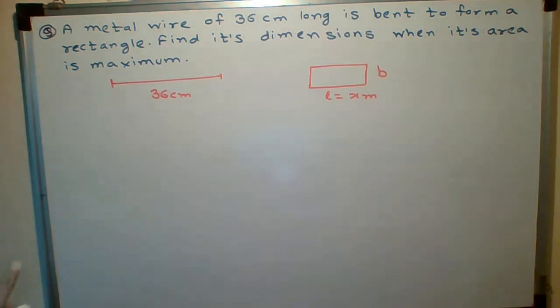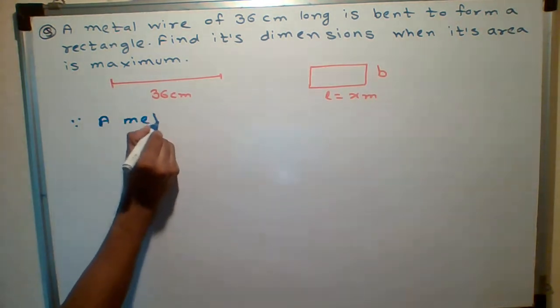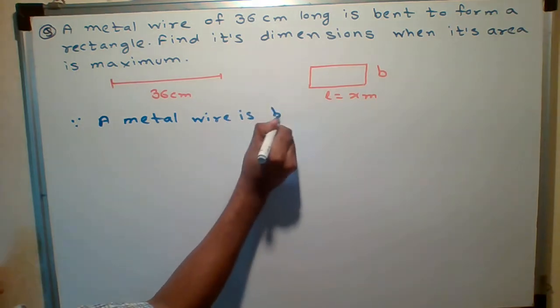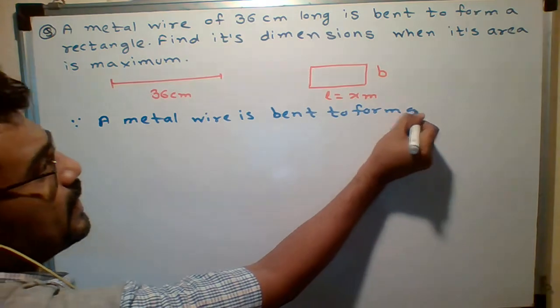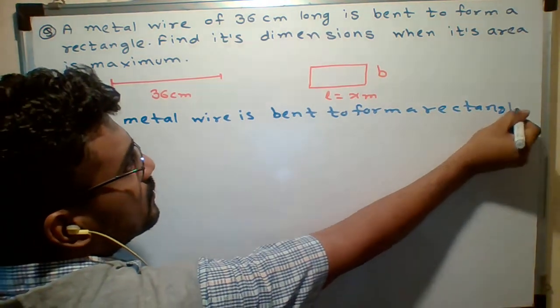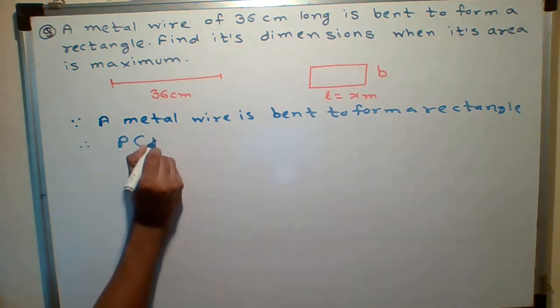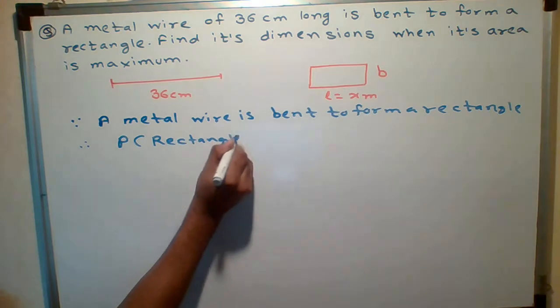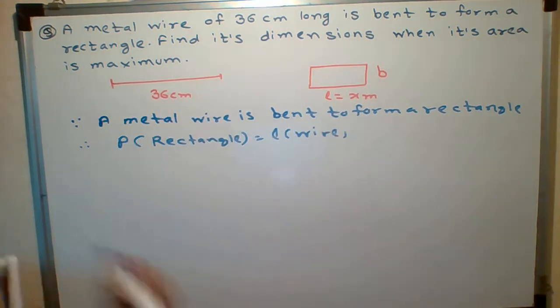So students, since a metal wire is bent to form a rectangle, that means perimeter of rectangle, perimeter of rectangle, can you say it is equal to length of wire? Because the length is, I have made a rectangle.